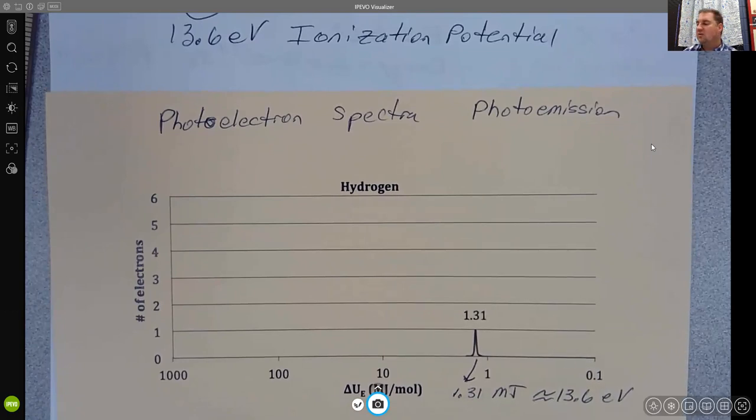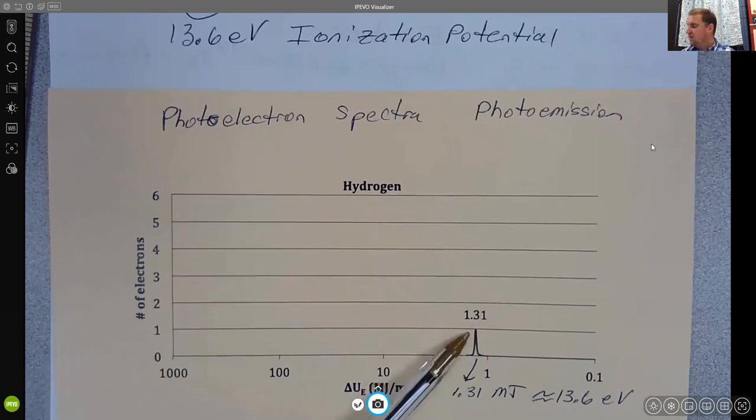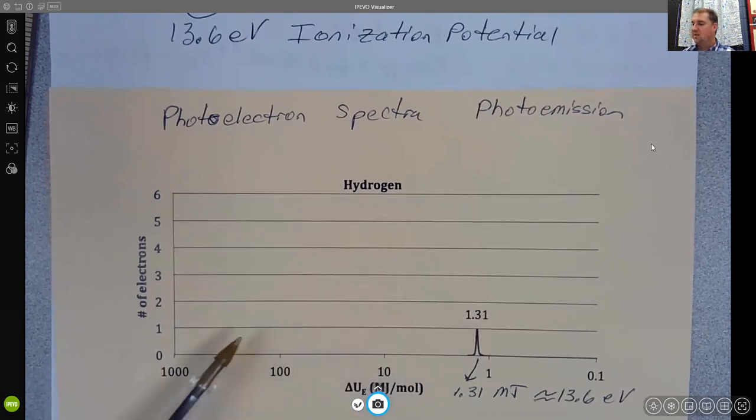This 1.31 megajoules is equivalent to our 13.6 electron volts. Notice it's close but not quite to being simply divided by 10. So as a rule of thumb, that'll get us pretty close comparing these energies in megajoules to electron volts. Hydrogen has one electron, and you can see that this peak height corresponds to one electron and that one electron would take this much energy to remove from the atom.